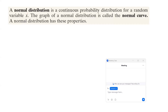What is a normal distribution? A normal distribution is a continuous probability distribution for a random variable like x. The graph of a normal distribution is called the normal curve.